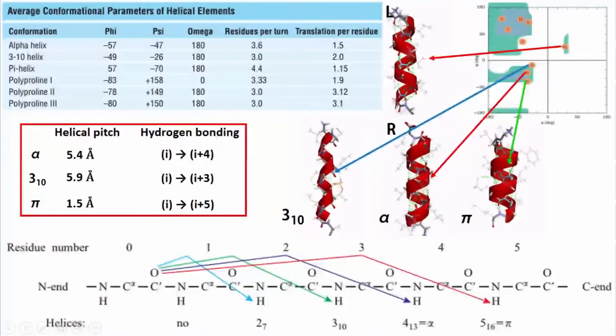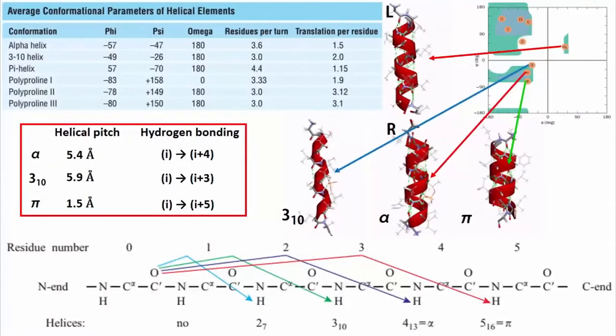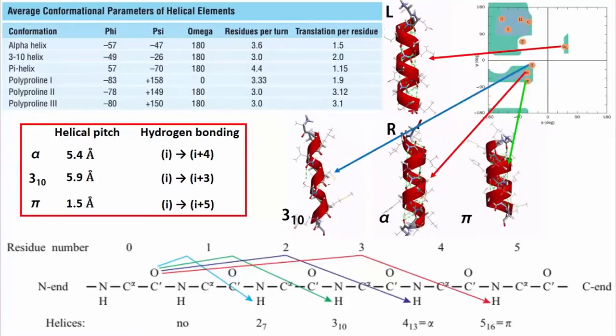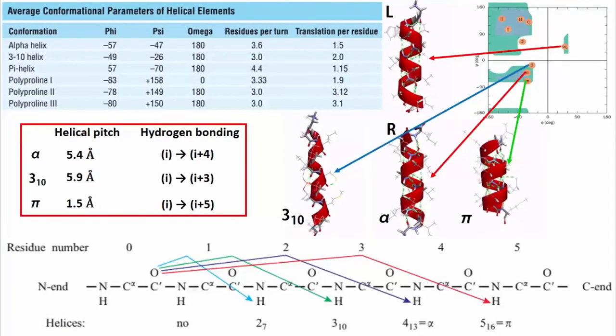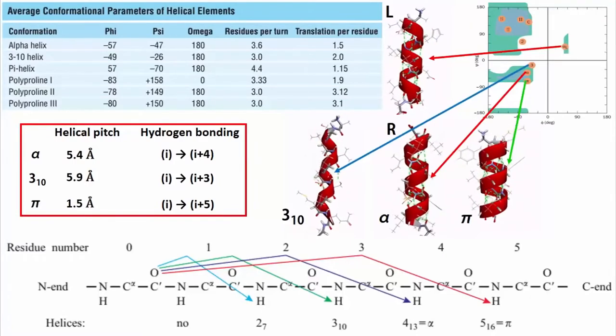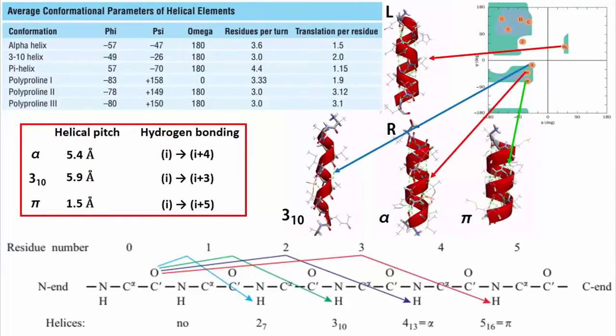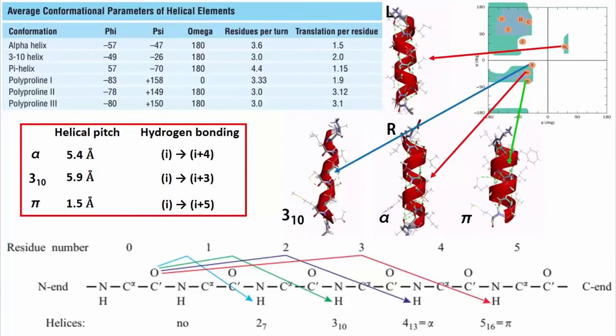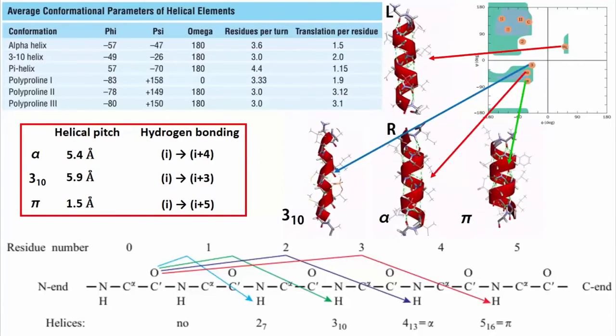Alpha helix structure repeats itself every 5.4 angstrom along the helix axis. This is why we say that alpha helix has a pitch of 5.4 angstrom. Alpha helices have 3.6 amino acid residues per turn.